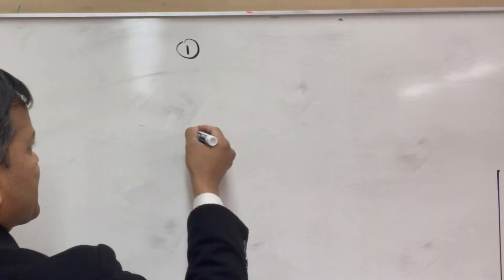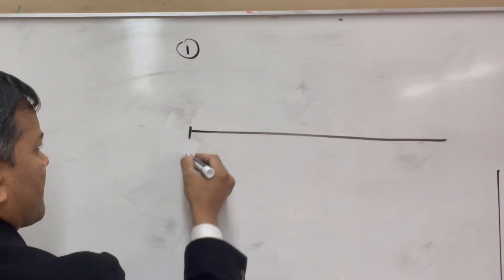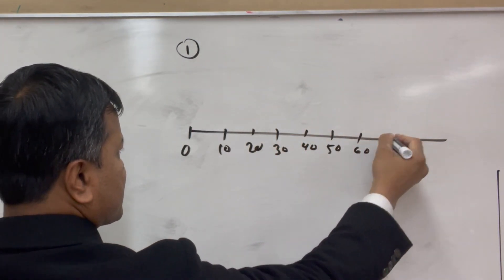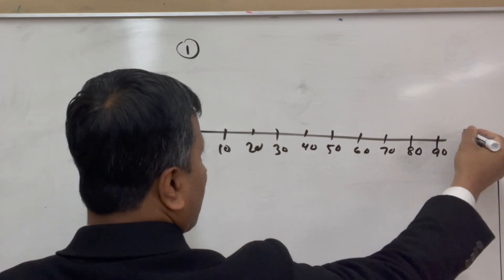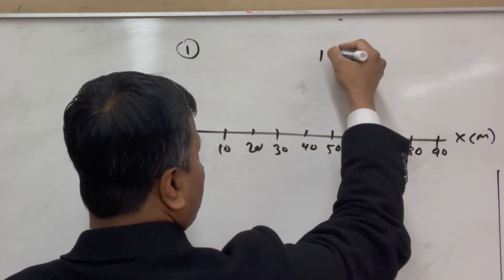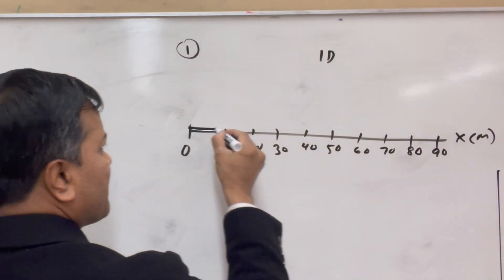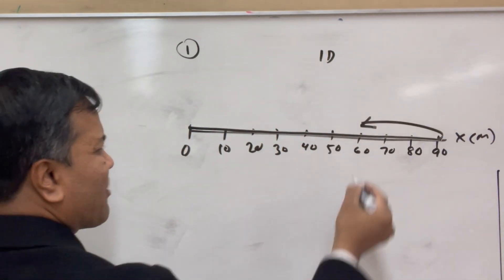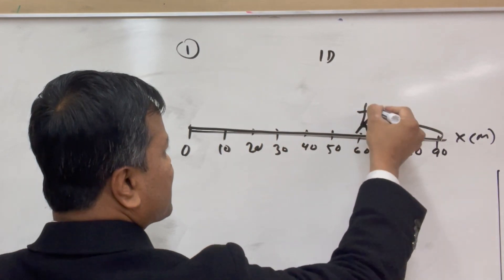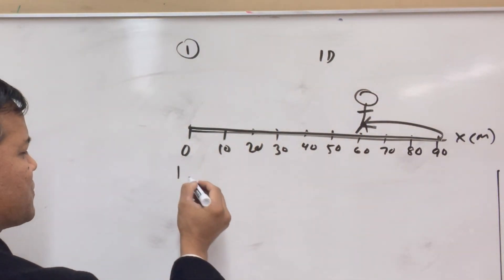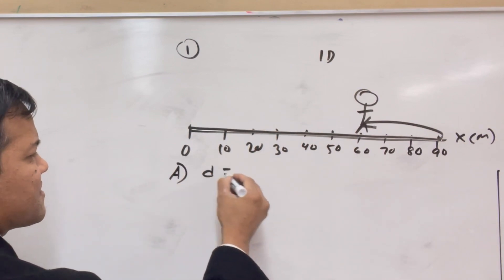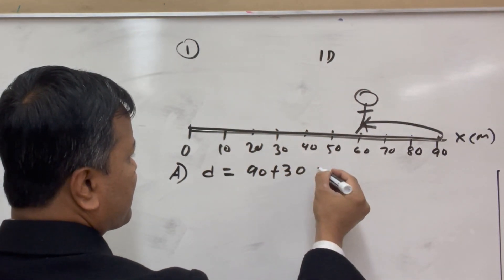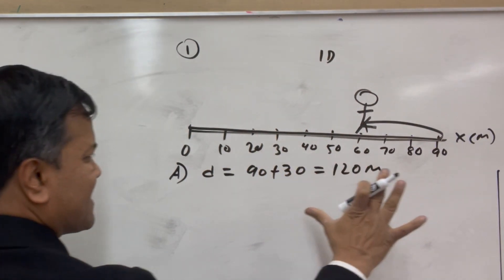Let's go over problem number four — actually, problem one. It's a one-dimensional problem. I give you positions: 0, 10, 20, 30, 40, 50, 60, 70, 80, and 90 on the x-axis. An object moves 90 meters to the east, turns around, and stops at 60 meters. First, find the distance. The distance is 90 meters plus 30 meters, which is 120 meters. That's the final answer.